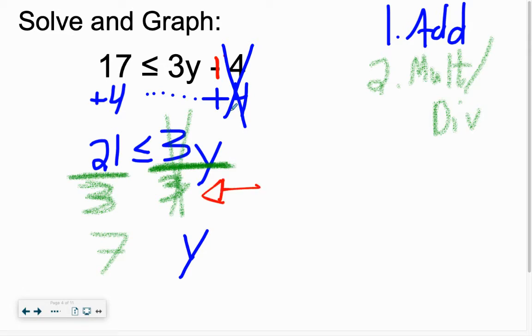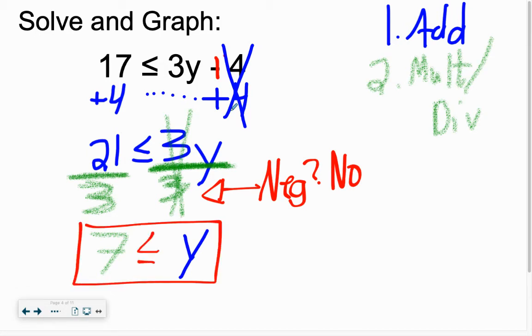On Step 2, we ask the question: did you multiply or divide by a negative? When we say no, you leave the sign the same and box it up. That's how we solve. Notice there are two steps, so I need to see those. It says to graph, so I'm going to put in a number line.